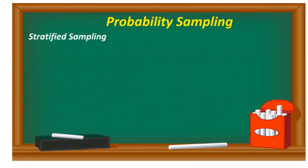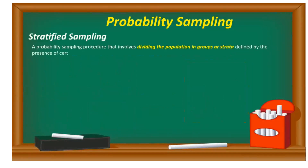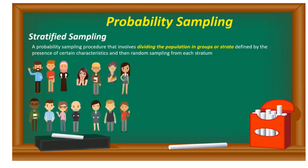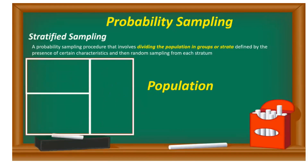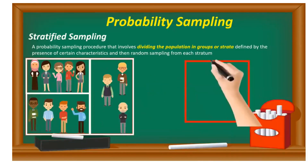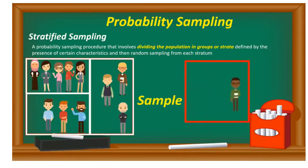Stratified sampling is a probability sampling procedure that involves dividing the entire population into groups or strata defined by the presence of certain characteristics — like age, or geography such as north, south, east, west, or maybe male or female — and then randomly selecting a sample from each stratum. For example, we divide the population into different strata based on male and female and elderly people. We then select at least one person from each stratum. This is stratified sampling.